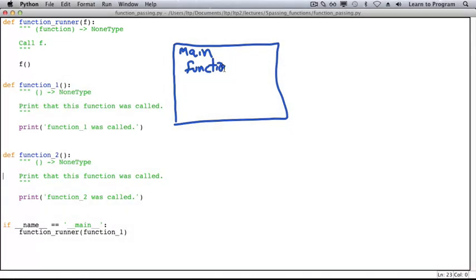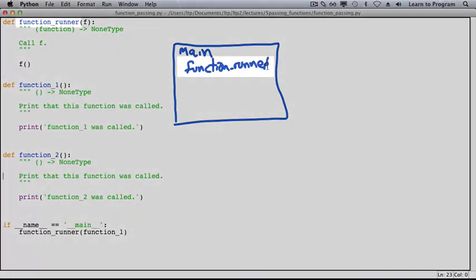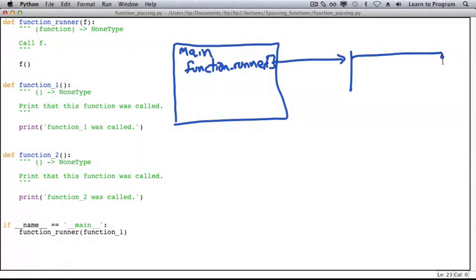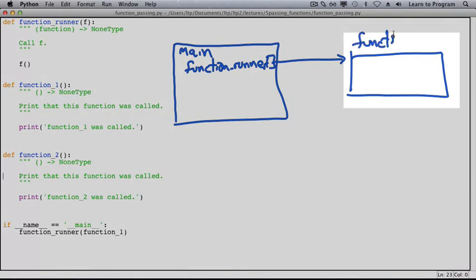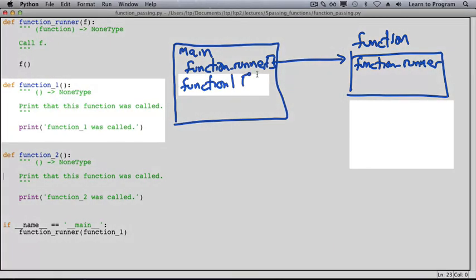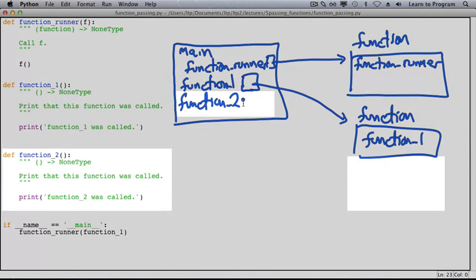Every function definition creates a variable with the name of the function that contains the memory address of a function object that contains all the details of what it means to run that function when it's called. This happens when we define function 1, then function 2.